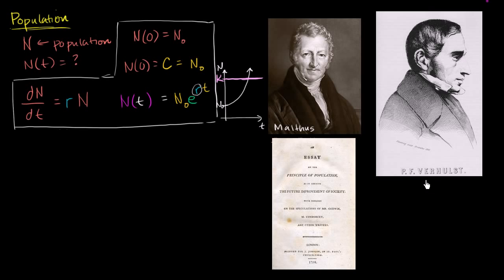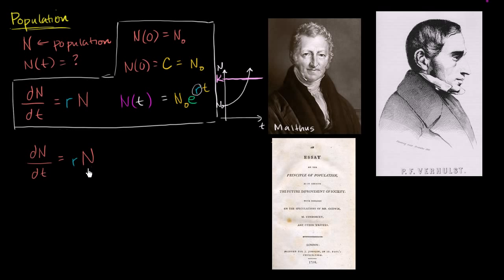That's where P.F. Verhulst came into the picture, because he read Malthus's work and said he could do a pretty good job modeling that behavior. What we really want is another differential equation where, if N is substantially smaller than what the environment can support, exponential growth makes sense. But maybe we can dampen this — bring the growth to zero as N approaches K.